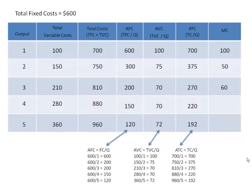What you can see here is that the marginal cost is in fact the change in total variable costs every time you increase output. It is also the change in total costs as you increase output, because the change in total costs is only coming from the change in variable costs. What happens when we go to four units of output? Our fixed costs don't change, but our variable costs go from $210 to $280, so they increase by $70. Said another way, our total cost increased from $810 to $880 — that was that $70 increase in costs for producing the fourth unit. Now you tell me, what's the marginal cost of the fifth unit? $280 to $360 — $80.